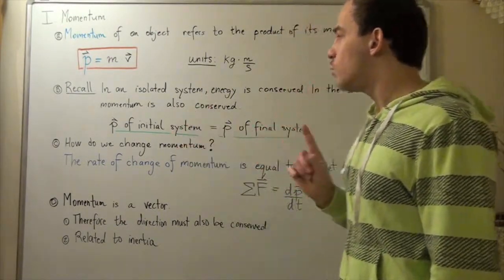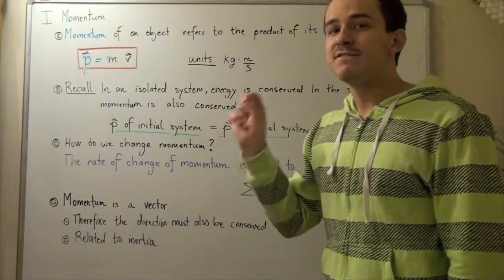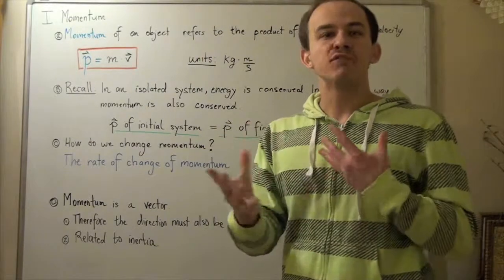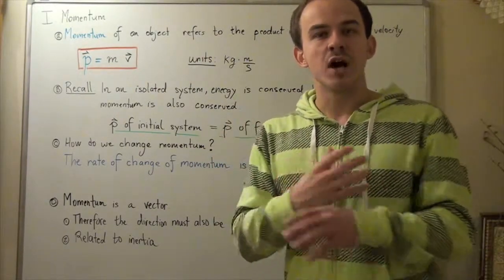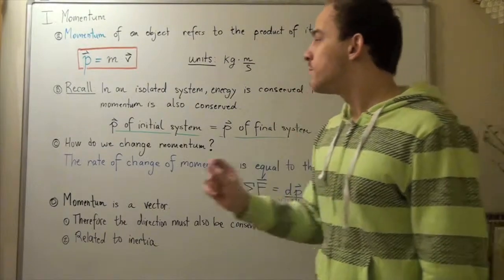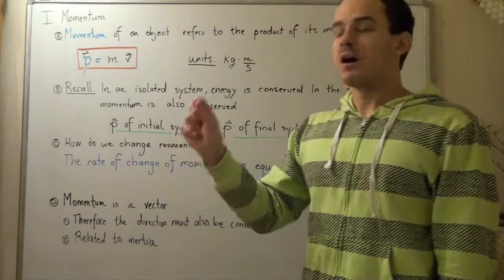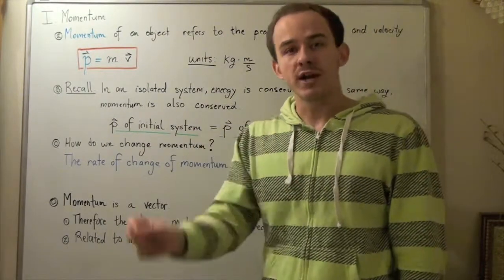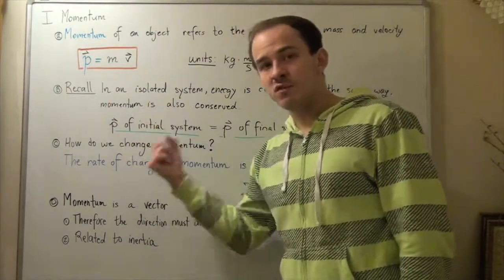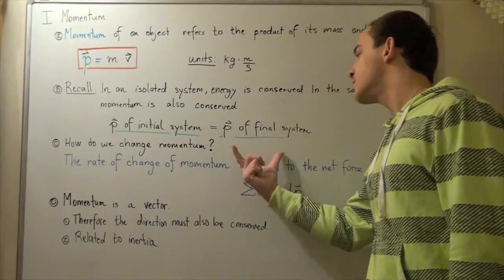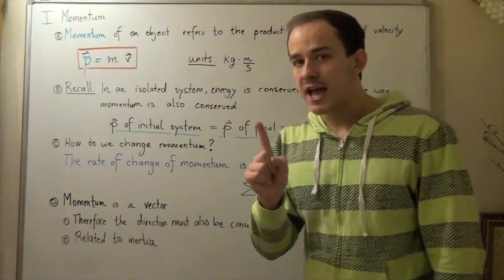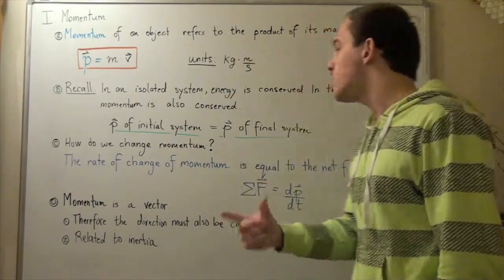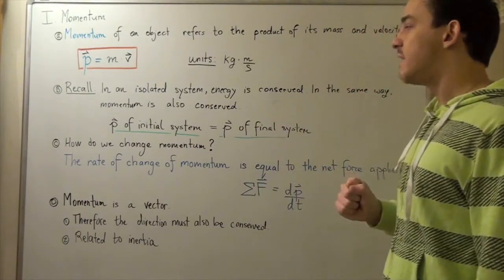Notice the following: energy is not a vector — energy is only a scalar, it has magnitude. So we don't have to worry about the conservation of direction. But with momentum we do, because momentum is a vector, meaning it has both magnitude and direction. So our initial magnitude of momentum must equal the final magnitude of momentum, and in the same way, the initial direction of our momentum vector must equal the final direction of the momentum vector.